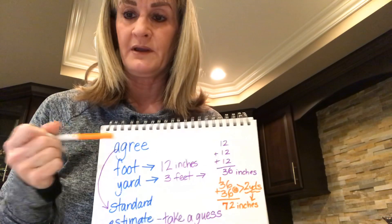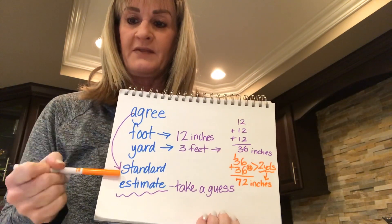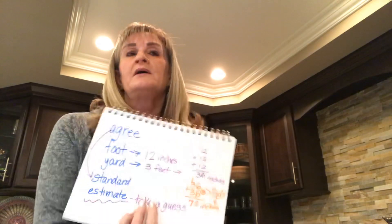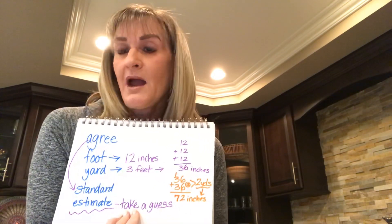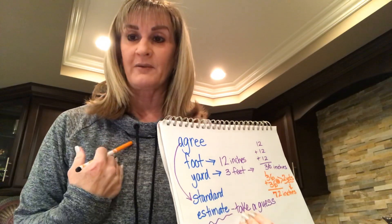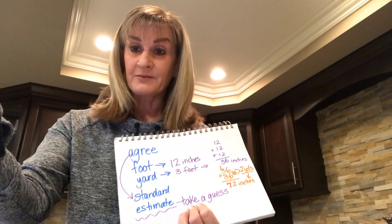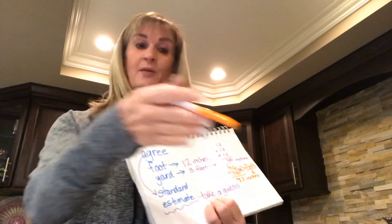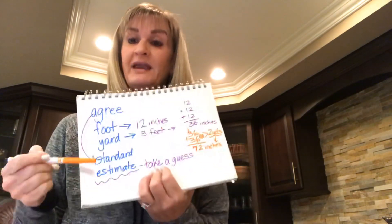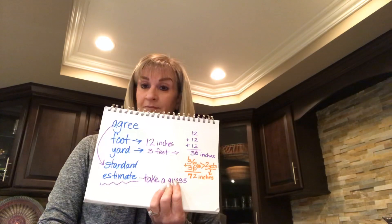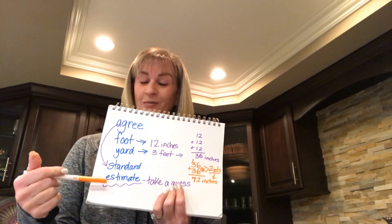Let's review super quick. We have: agree — we all need to agree; foot; yard; standard — we all have to agree on that standard; and estimation — estimate. For example, think about your desk back at school: how many inches do you think that desk is from one side to the other? For Mrs. Green's class, since you have those whiteboard tables, how many inches long do you think the tables are? You can still make an estimate, a good guess.